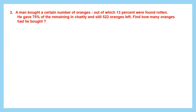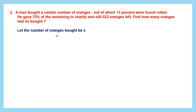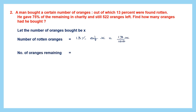Question 6. A man bought a certain number of oranges, of which 13% were found rotten. He gave 75% of the remaining to charity and still had 522 oranges left. Find how many oranges he bought. Let the number of oranges be X. Number of rotten oranges is 13% of X, which is 13X/100.